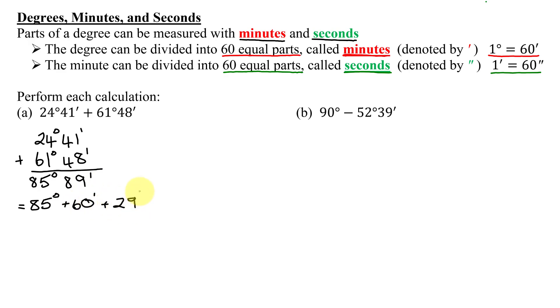It's going to be 29 minutes. But remember, 60 minutes is 1 degree. So I have 85 degrees plus, instead of 60 minutes, I'm going to write 1 degree plus 29 minutes. And now you can add 85 degrees and 1 degree to get 86 degrees 29 minutes, and that's the answer to part A.